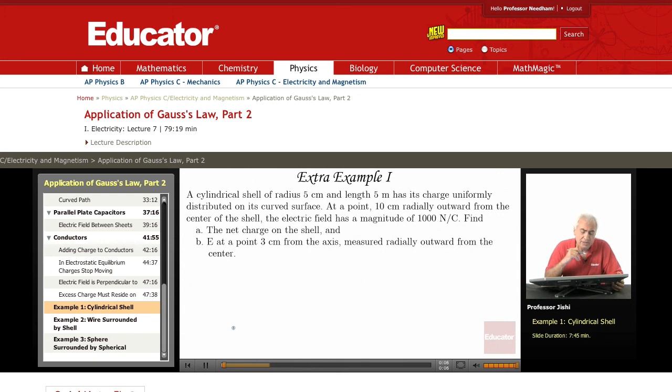This one we have a cylindrical shell of radius 5 centimeters and length 5 meters. So here the idea is that the length is much, much larger than the radius. So we can think of it as if it's an infinitely long cylinder.